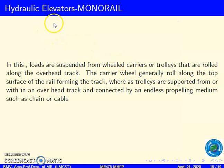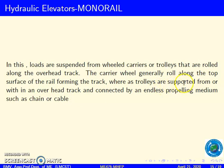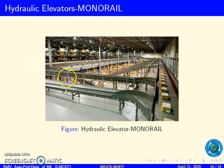Now we will see what is a monorail elevator. In this, loads are suspended from wheeled carriers or trolleys that roll along an overhead track. The carrier wheels generally roll along the top surface of the rail forming the track, whereas trolleys are supported from or within an overhead track, and connected by an endless propelling medium such as a chain or a cable.